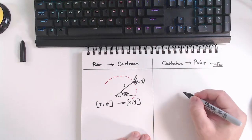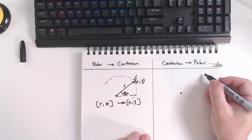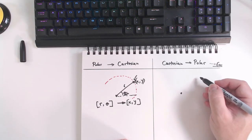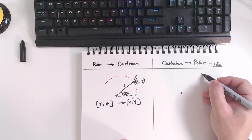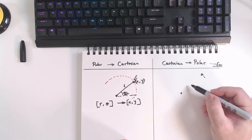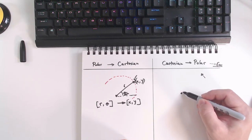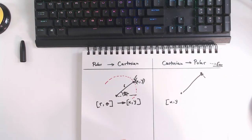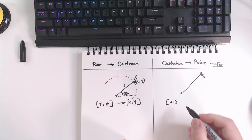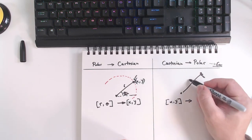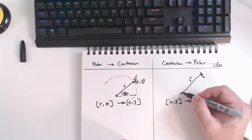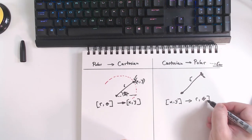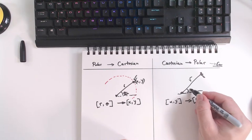Now we're going to do the opposite. We know the X and Y of the mouse cursor because it's our cursor that we move on the canvas, and we need to figure out the angle it makes with a certain origin point. More importantly, we're interested in calculating this particular theta — the angle between the eye center and the mouse cursor.